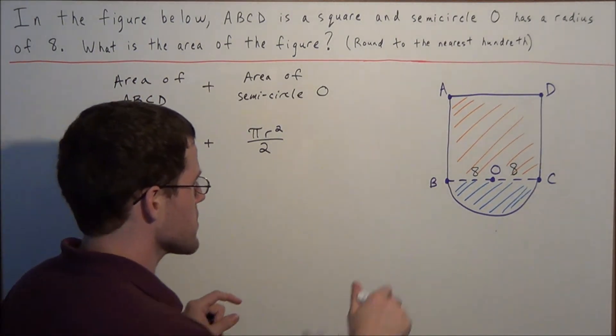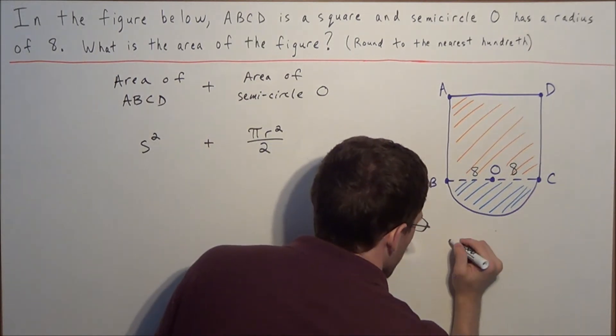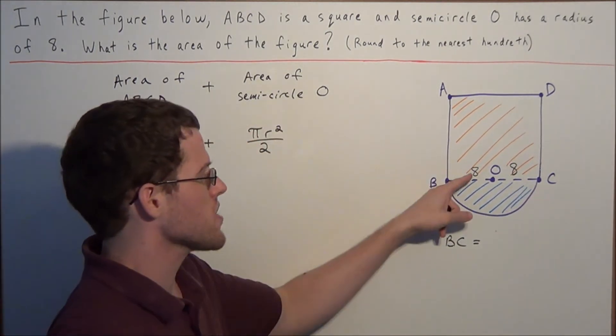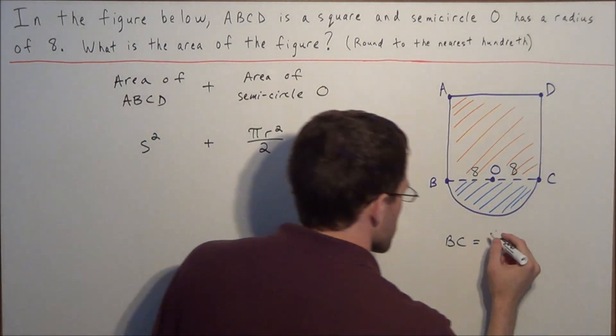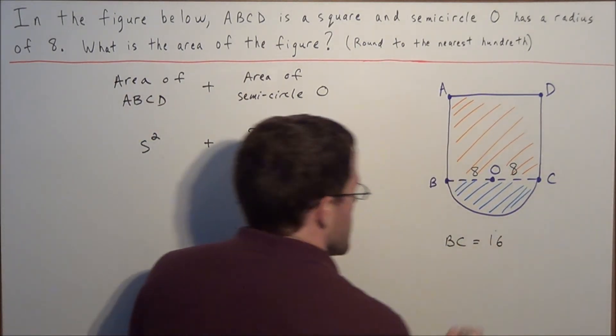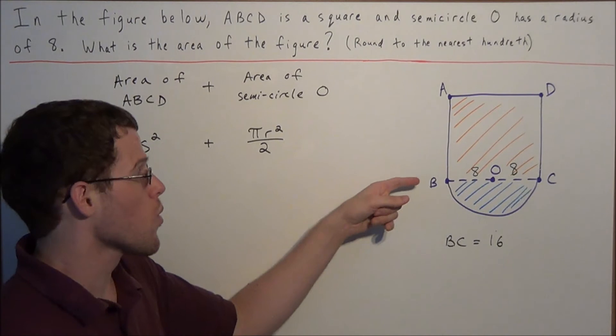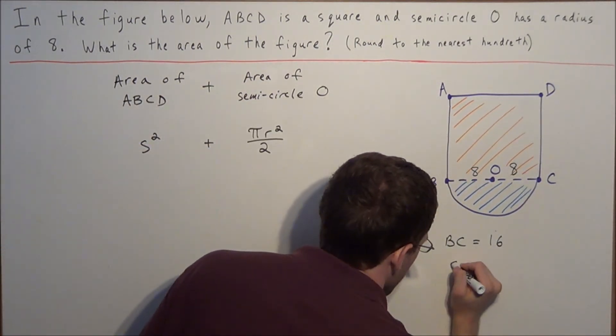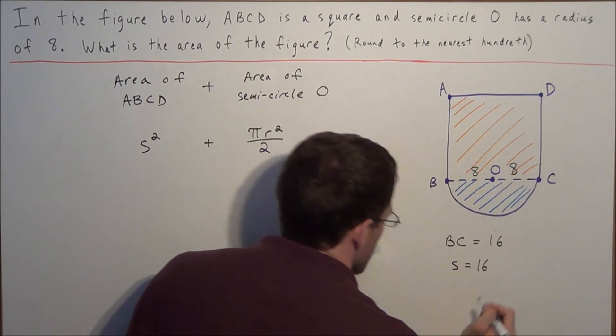So now what we just found is the length of BC. Now we could say the length of BC is equal to 8 plus 8 or it's equal to 16. But notice how BC is one of the sides of square ABCD. So this tells us that the side of the square has a length of 16.